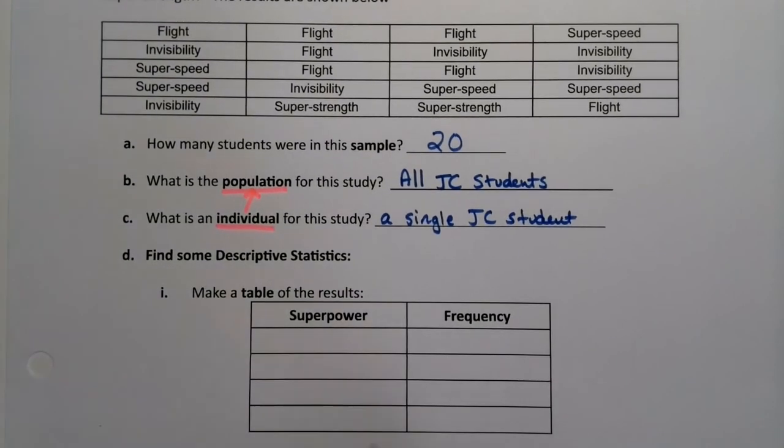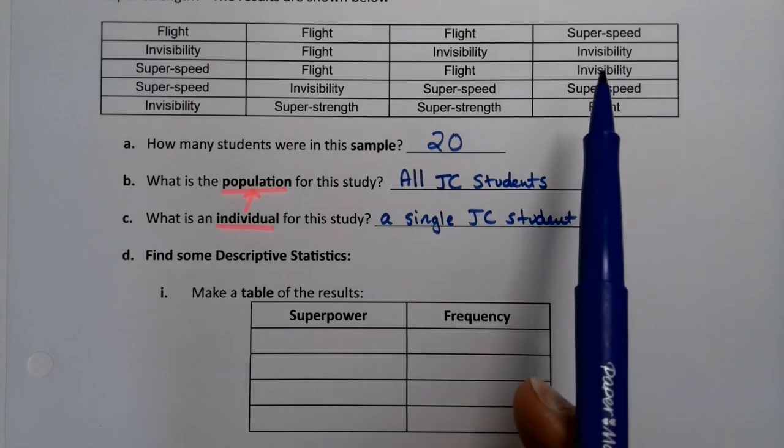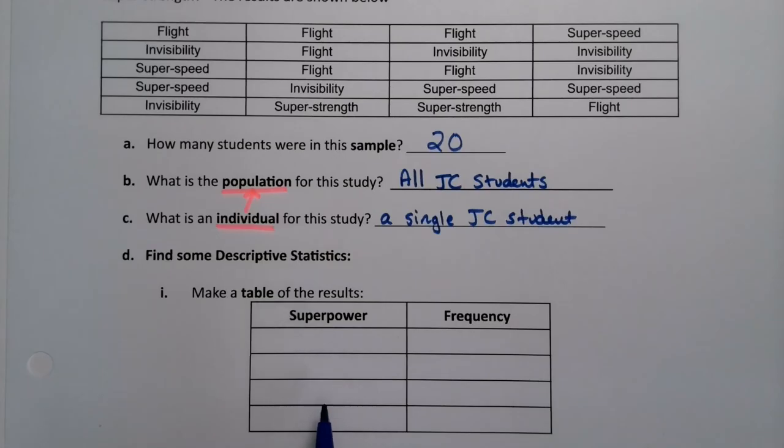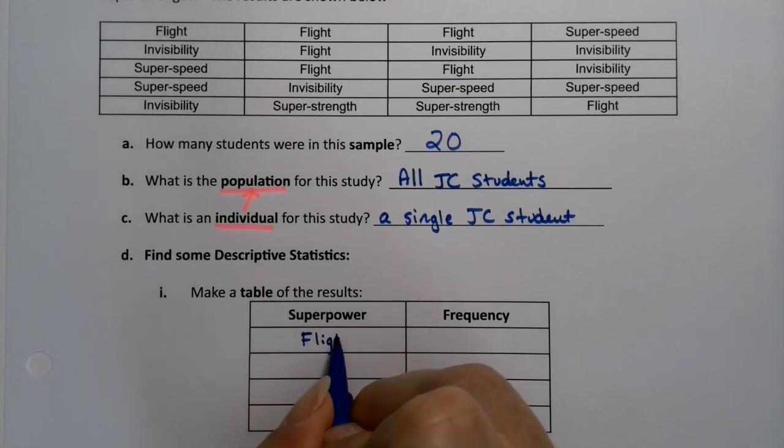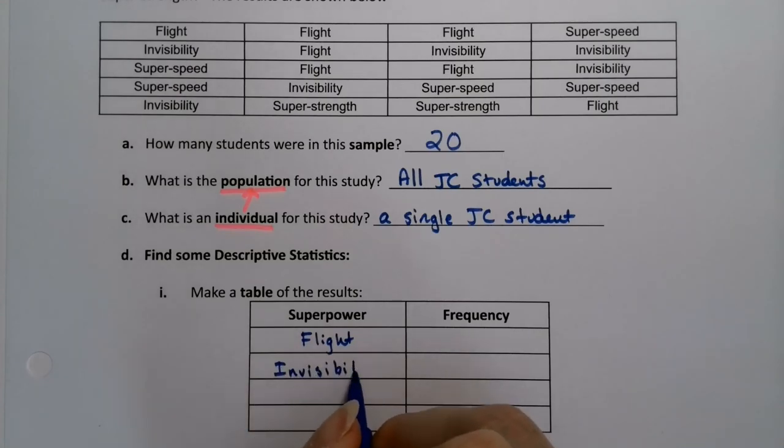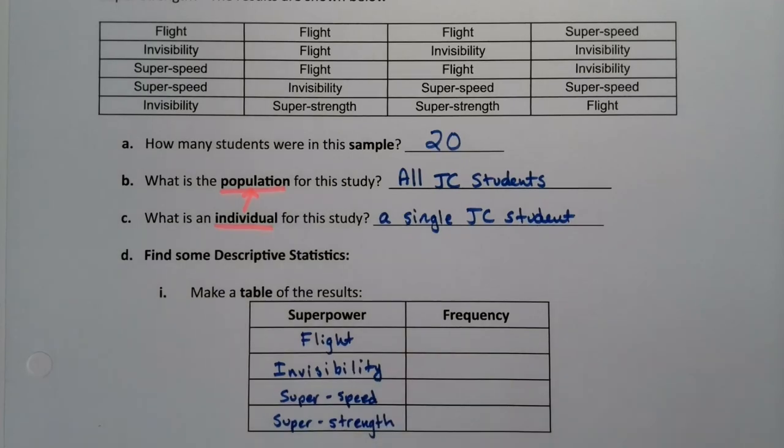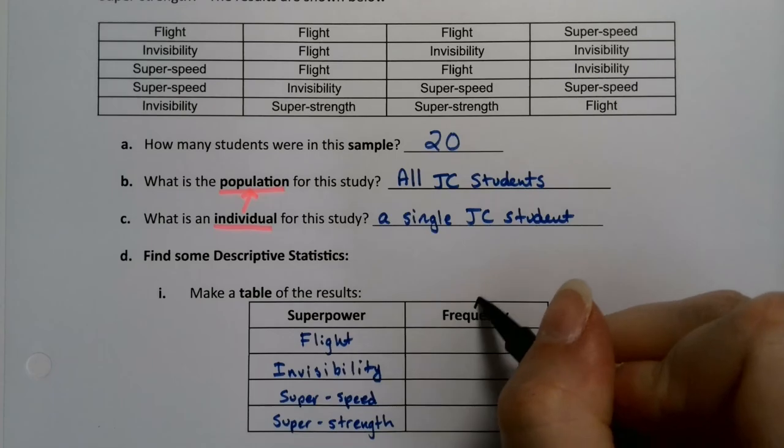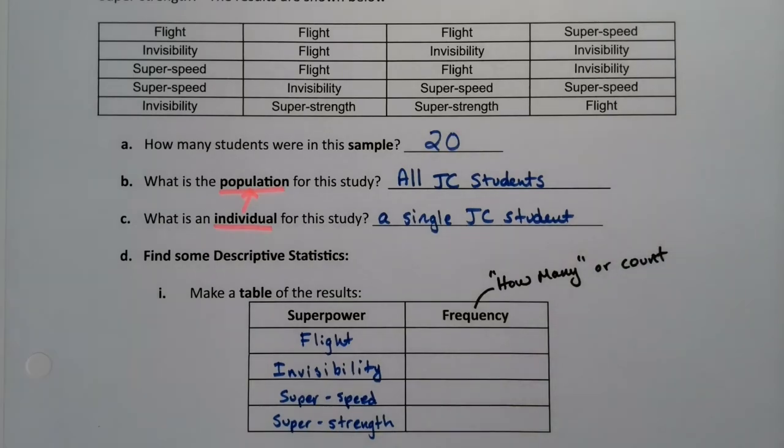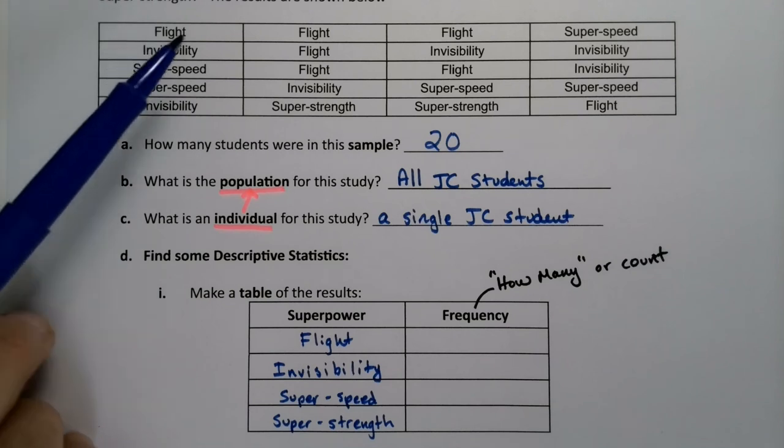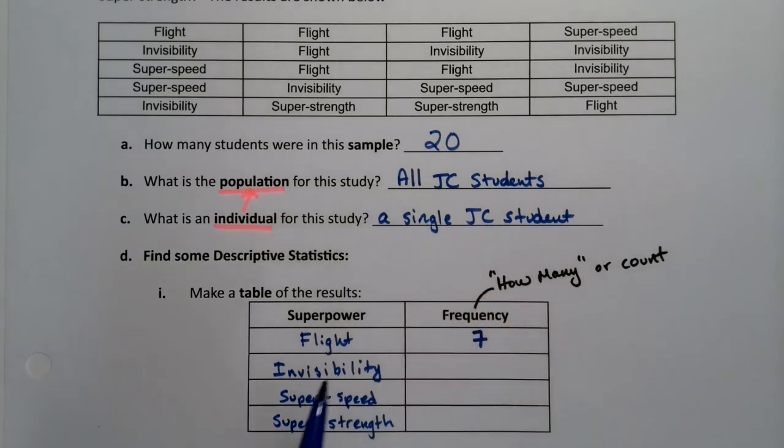Now let's do some organizing - that's the collection part of statistics up here. The information was collected, and now we're going to spend some time organizing it. We're going to make a table of our four superpowers. So there was flight, invisibility, super speed, and super strength. Frequency is a fancy way to say how many, what was the count? You literally count how many in the group are in flight, invisibility, super speed, and super strength. So flight is 4, 5, 6, 7.